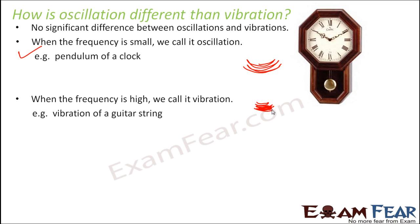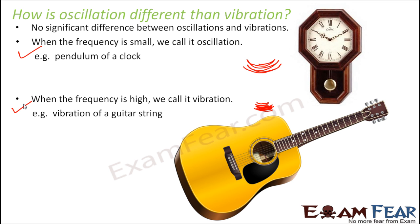An example of vibration could be the guitar string. When you look at the string of a guitar, you can actually see it vibrating, but it will be very fast. You cannot see exactly how it is going from end to end, but you can feel it is in very fast motion. So whenever the frequency is very high, whenever the movement is very fast, we use the term vibration. And when the frequency is small, that means it is slow motion, that is oscillation. That is the only difference between oscillation and vibration.